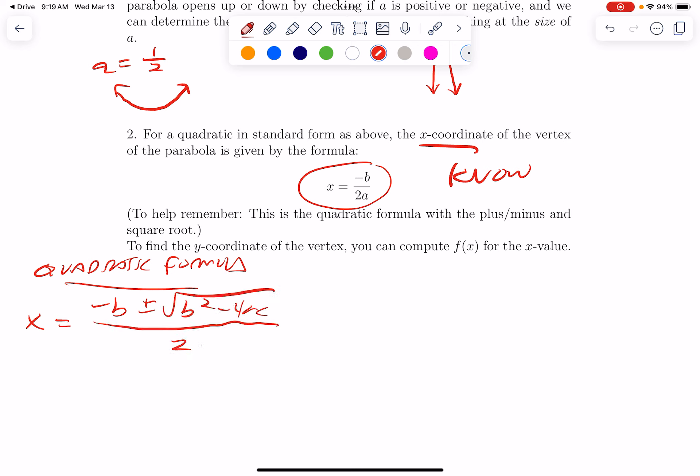We'll review the quadratic formula later on. But if you take all of this stuff with the radical and the plus minus, you're left with minus b over 2a, that will tell us the x coordinate of the vertex. Once we know the x coordinate, we can find the y coordinate by plugging into the formula.